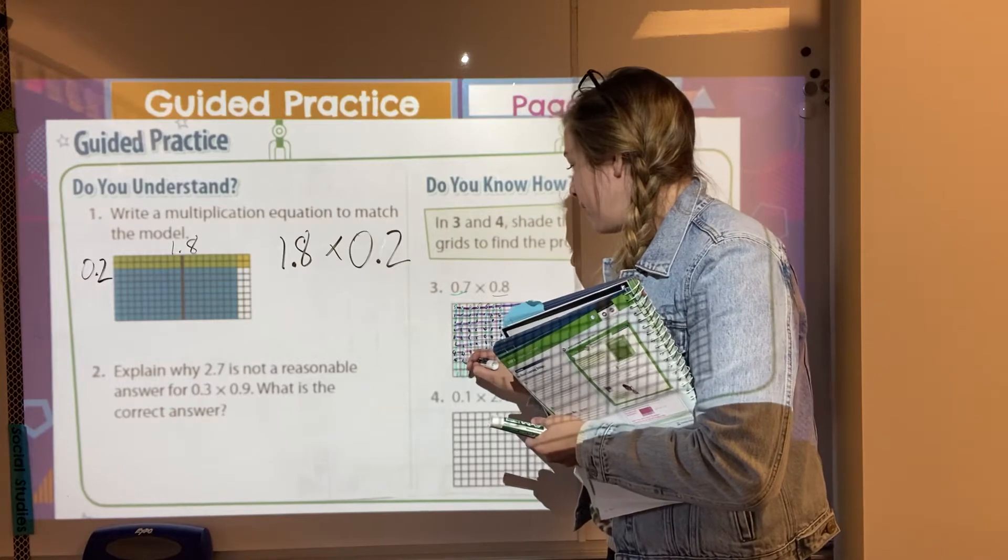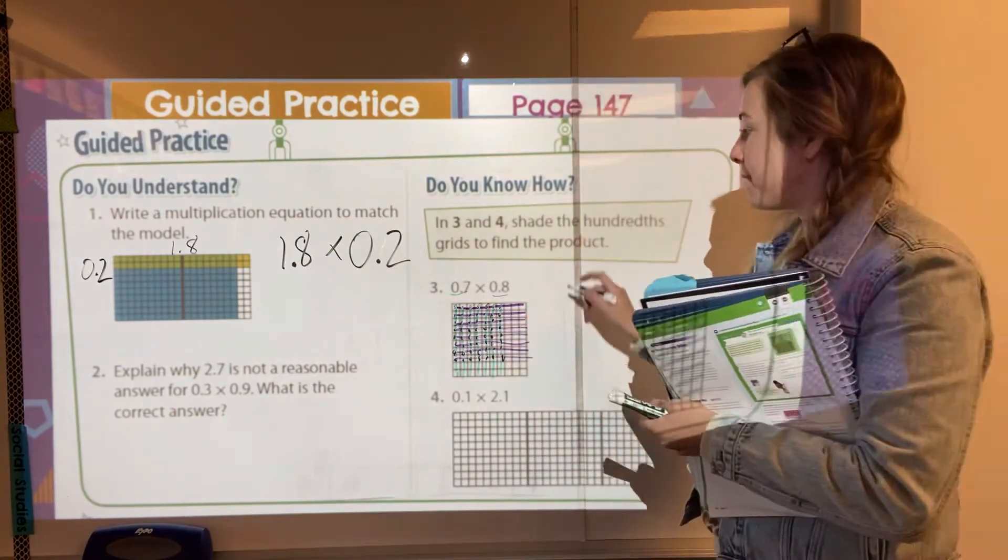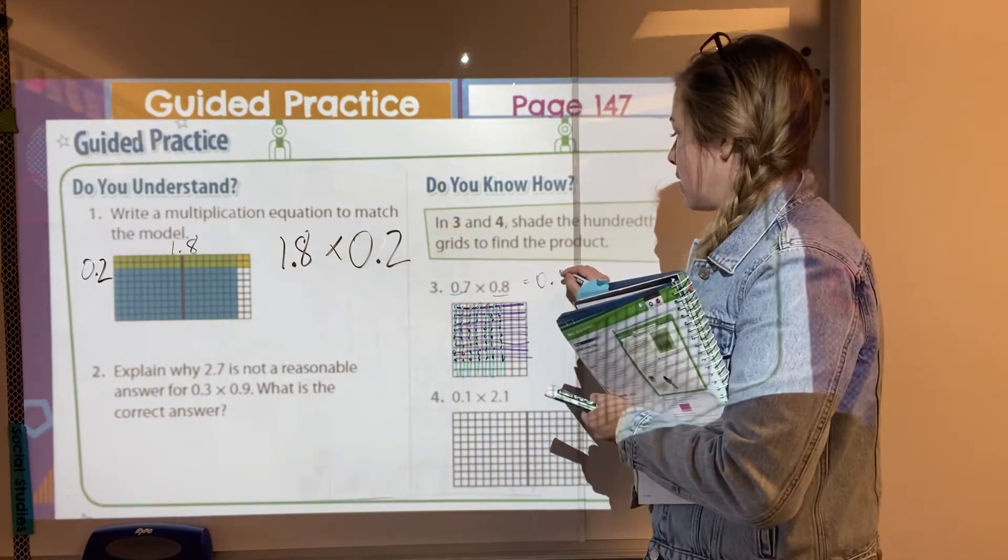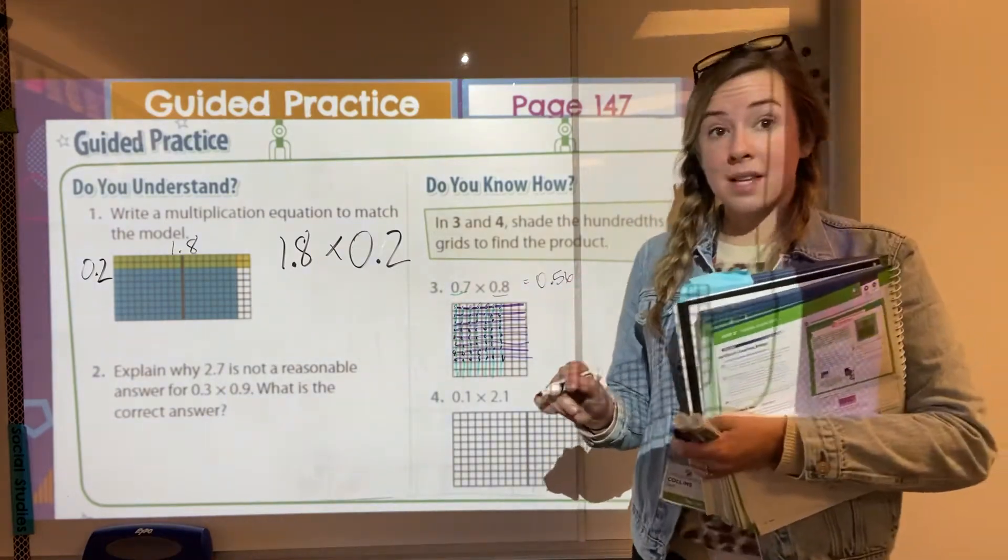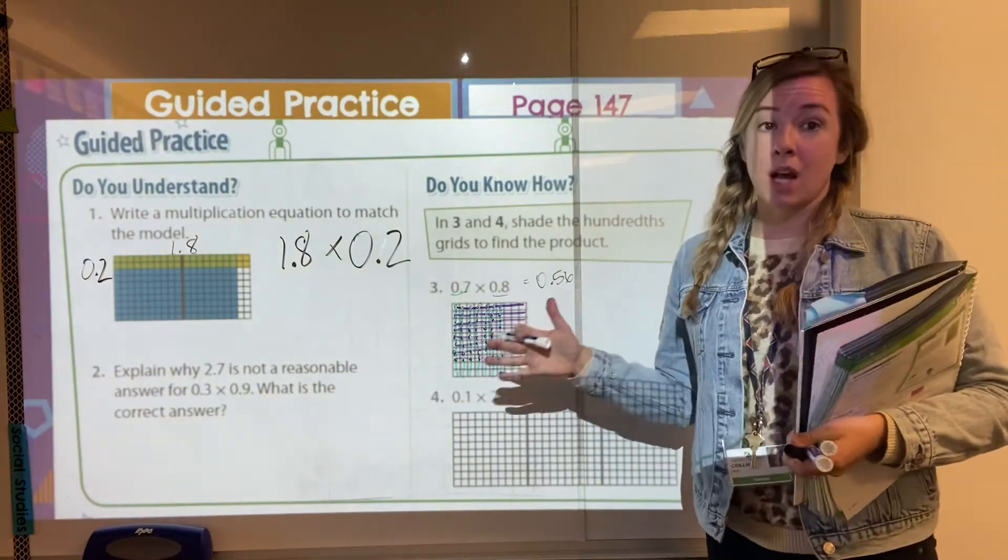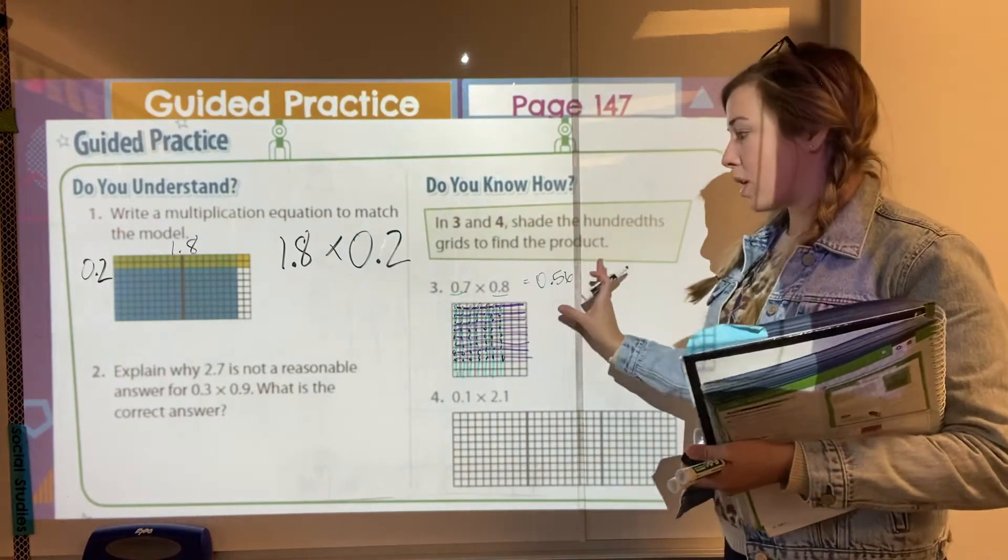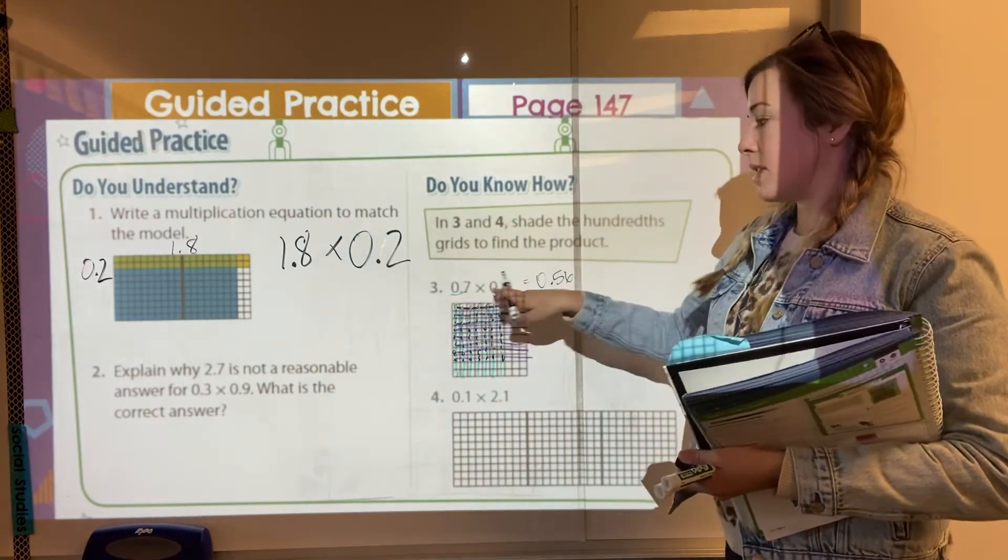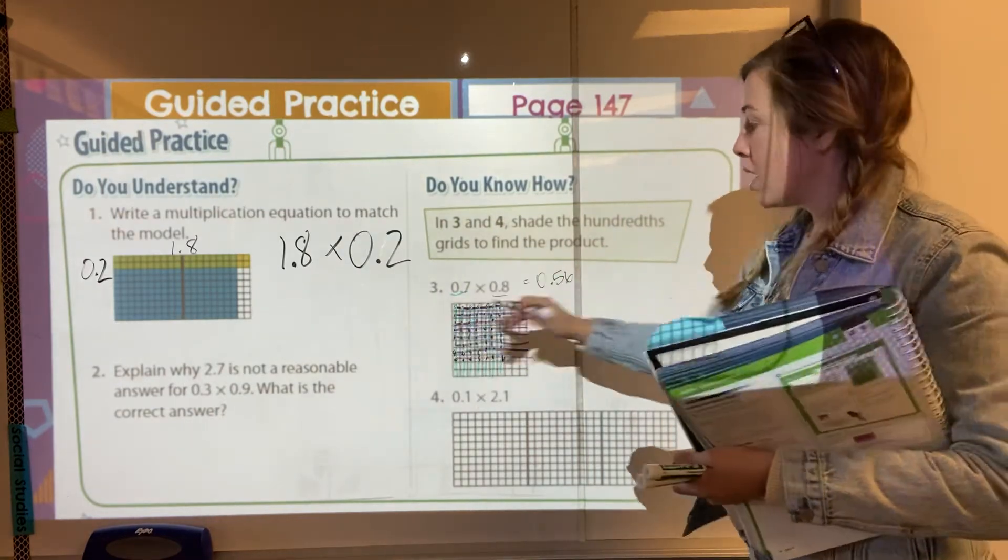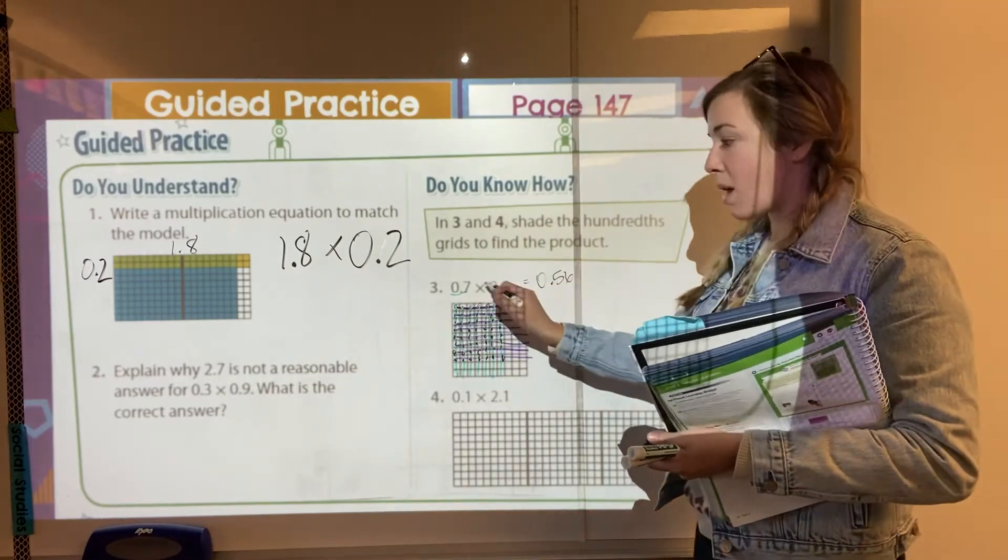And then we would have fifty-six little black dots on our thing. And it would be fifty-six hundredths. So we modeled it. Yes, it's beautiful. We use colors. And it's a great representation of how this is a part of a part, which can be kind of hard to visualize.